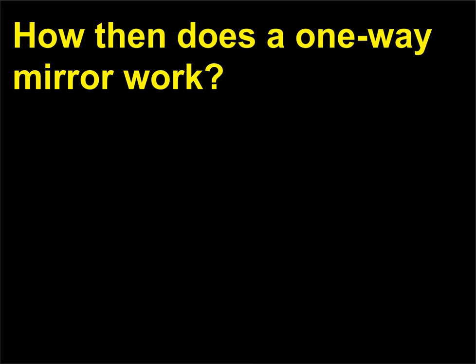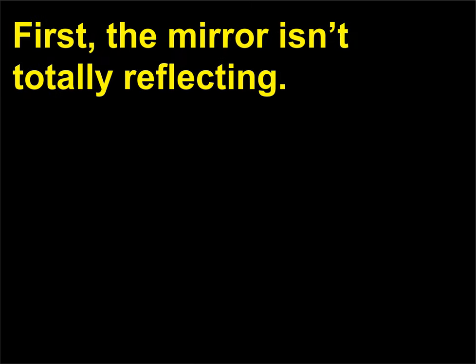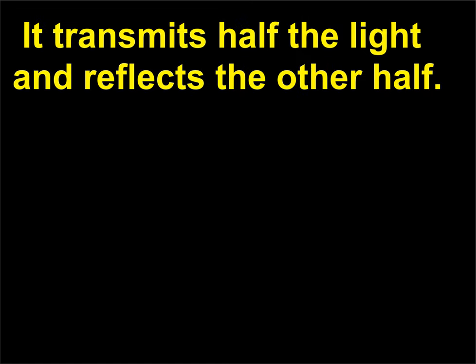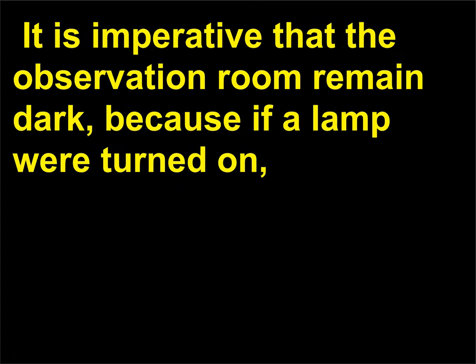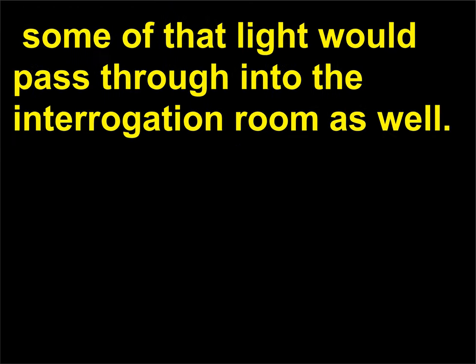How then does a one-way mirror work? First, the mirror isn't totally reflecting. It transmits half the light and reflects the other half. The second requirement has to do with lighting. It is imperative that the observation room remain dark, because if a lamp were turned on, some of that light would pass through into the interrogation room as well.